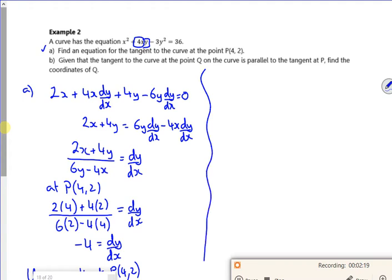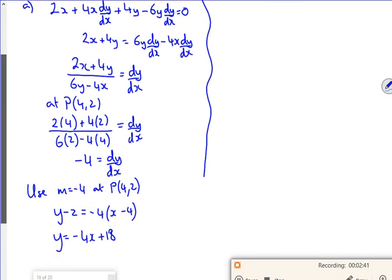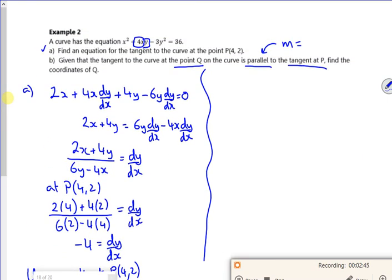Part B says, given that the tangent to the curve at point Q is parallel to the tangent at P. So what does that tell us? It tells us that the gradient must be minus 4. So I've got something for dy/dx. This is part B. Now the way I've done it is slightly different to the way the pack does it. It's exactly the same. They just didn't rearrange it. So my gradient is minus 4.